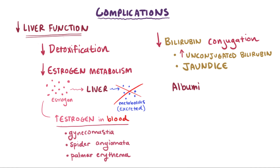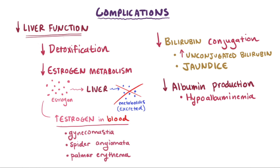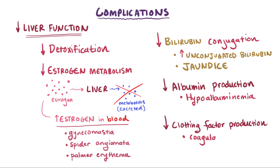Another important job of the liver is producing albumin, so if the liver is not functioning right, you can have a decreased amount of albumin in the blood, or hypoalbuminemia. Finally, the liver helps in making clotting factors — proteins that help coagulate your blood — so when you aren't producing these coagulation factors, you can develop issues related to your ability to coagulate blood, which you need in order to stop blood loss after an injury.